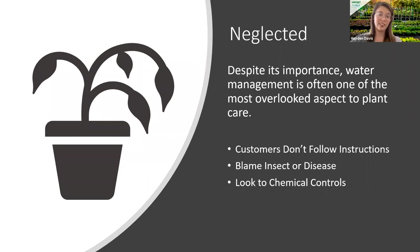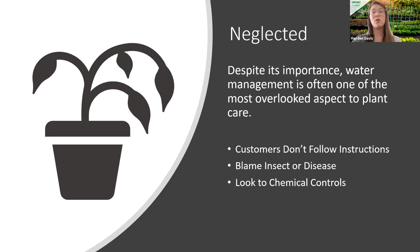This poor wilting plant is what happens whenever there isn't proper water management. Despite its importance, water management is often one of the overlooked aspects — people look at it as just water, like you can buy it at the grocery store for $3 a case. But it adds up, especially when you're growing, landscaping, turf, and trees. Whenever customers don't follow instructions, they blame insects or disease and look to chemical controls.